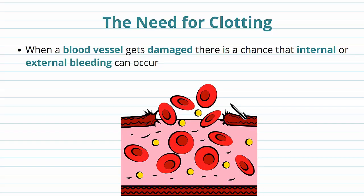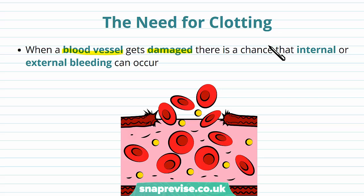The process of forming a blood clot is a really important function for survival. If a blood vessel ever gets damaged, there's a chance that there could be some bleeding, and this could be either internal bleeding, which means that we bleed into our own body, or external bleeding into the environment.